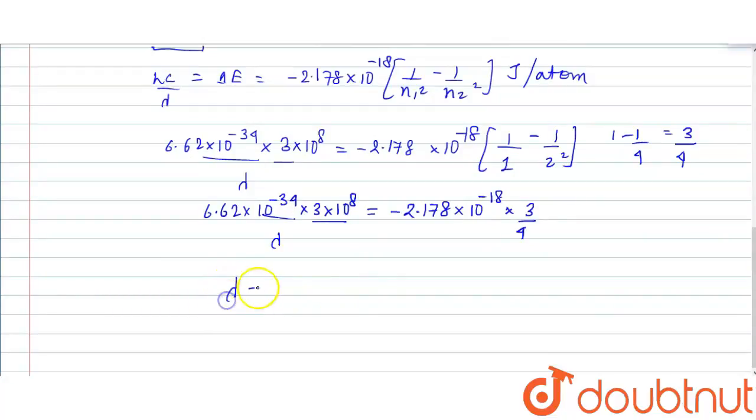Now, finding lambda, we have 6.62 times 3 divided by 2.178 times 3 times 4, and powers would be minus 34 plus 8 plus 18. After solving we get the value as 12.14 times 10 to the minus 8 meter.